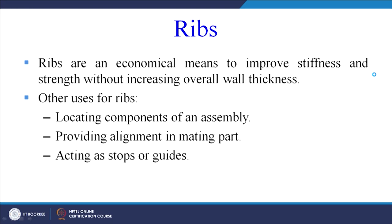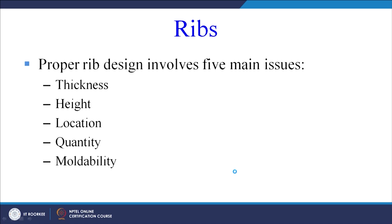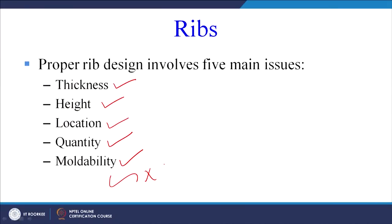Ribs are an economical means to improve stiffness and strength without increasing the overall wall thickness. Other uses for ribs include locating components of an assembly, providing alignment in mating parts, and acting as stops or guides. Proper rib design involves 5 main issues: thickness of the rib, height of the rib, location, quantity, and moldability — since some rib designs may be difficult to mold.